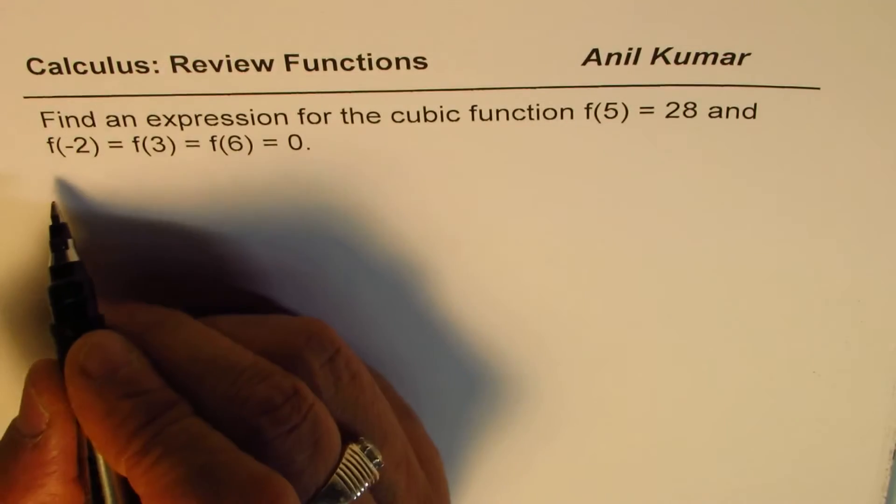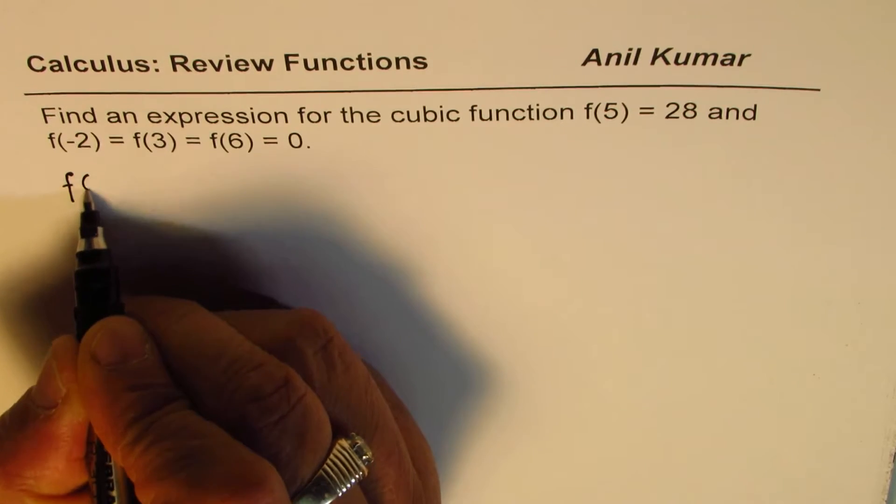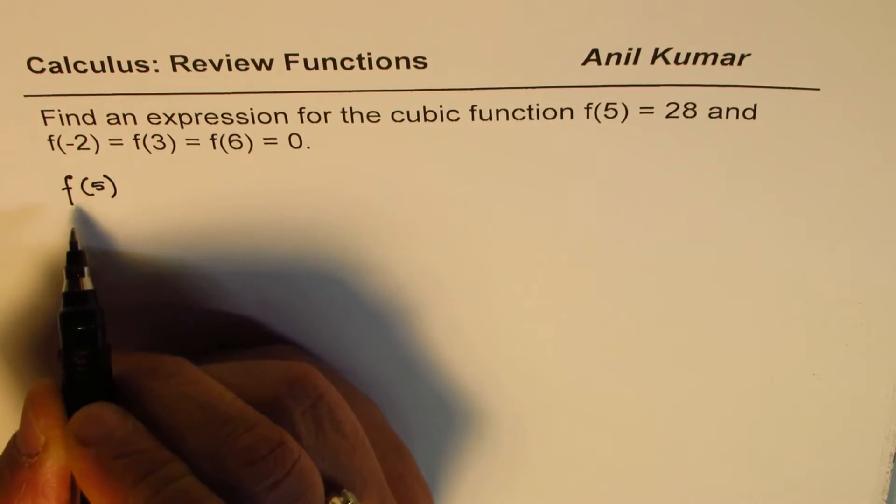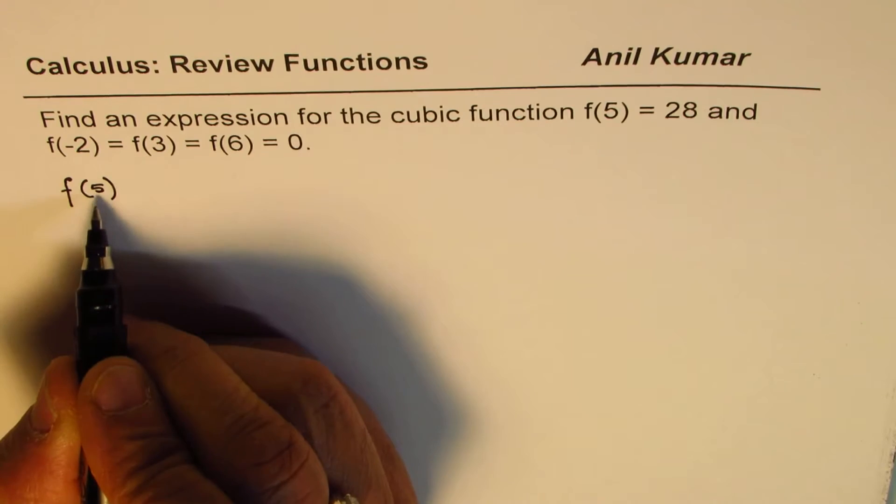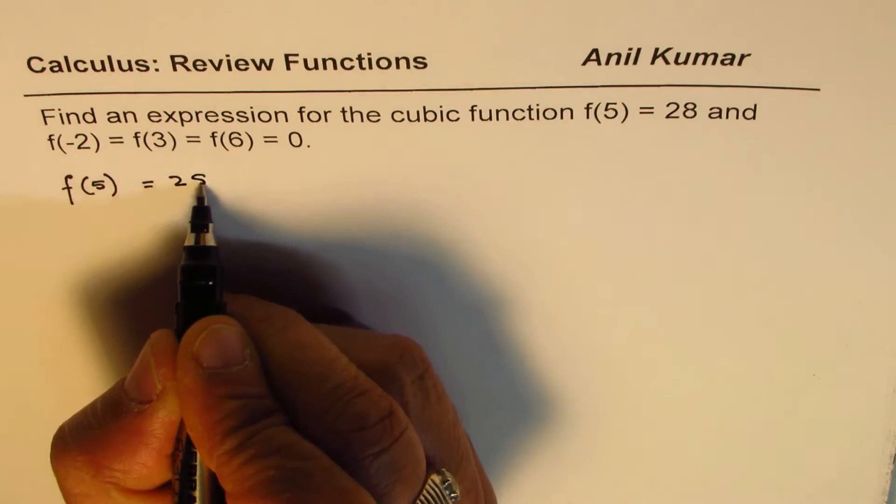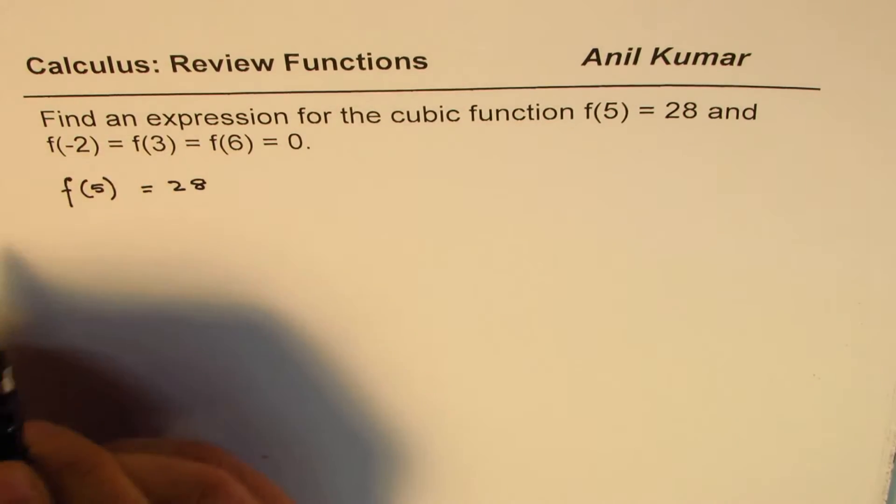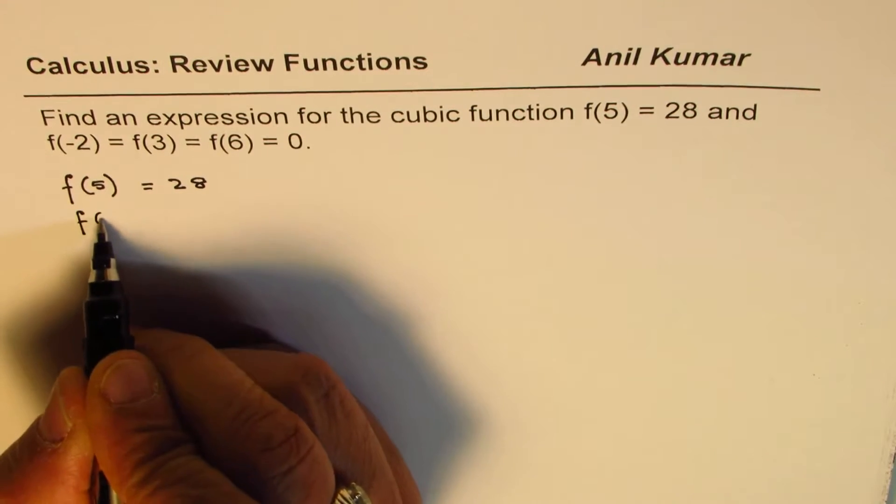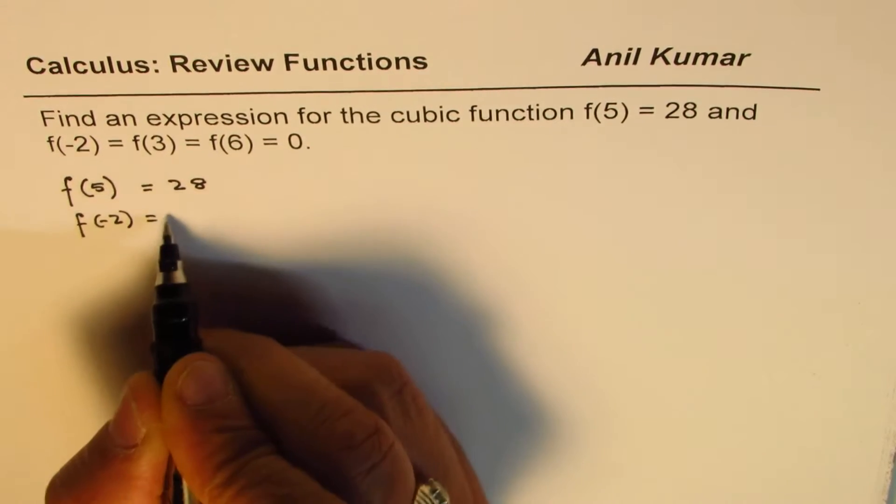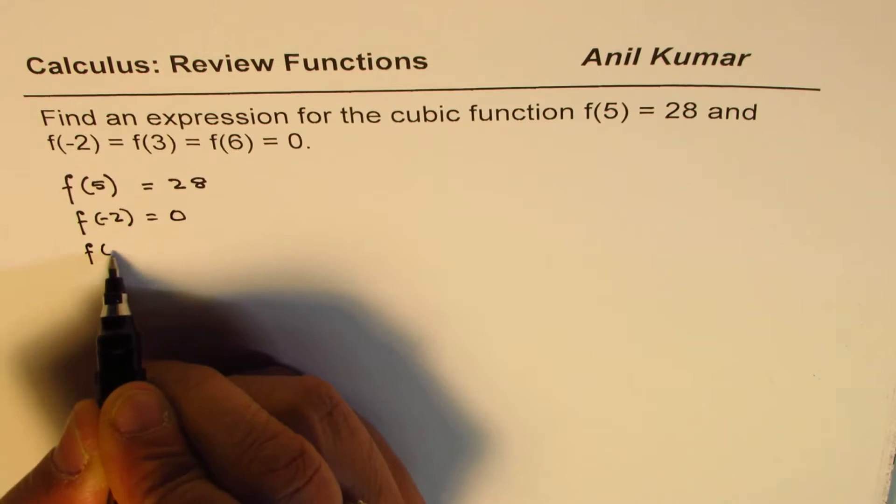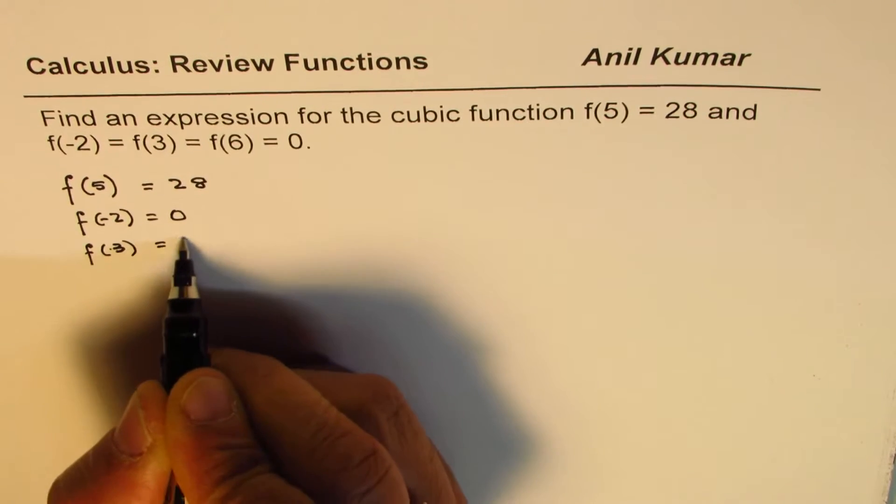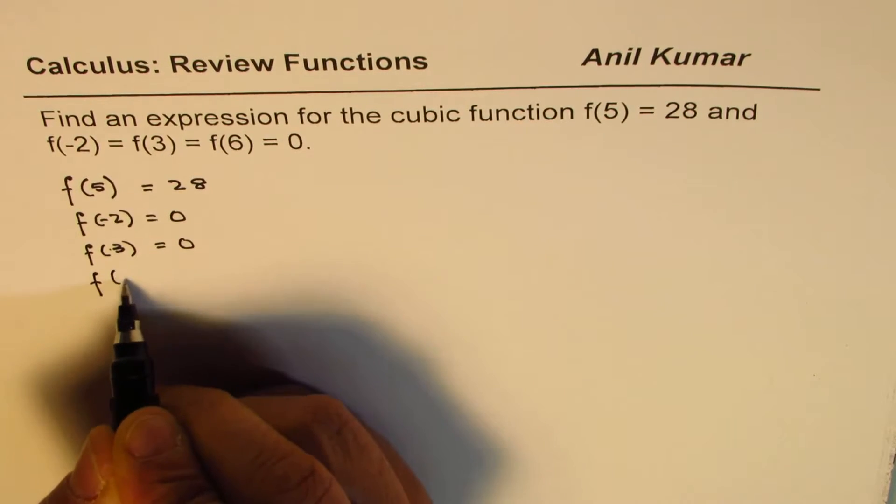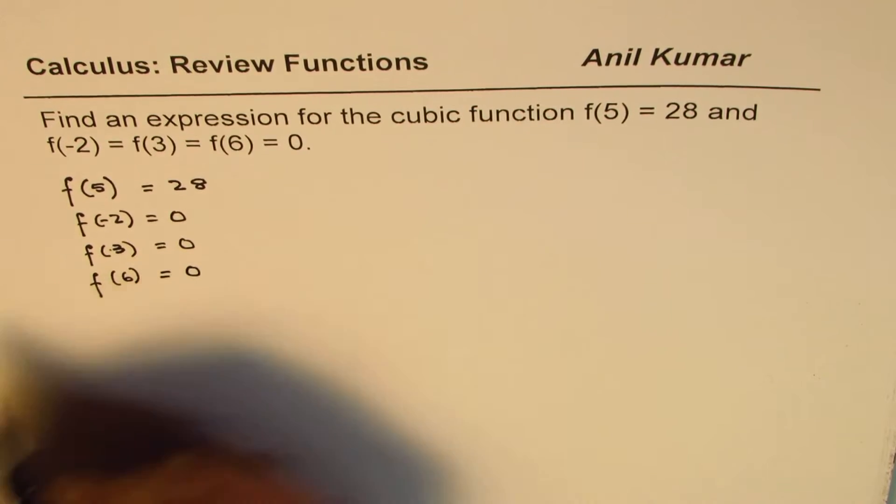Let's capture this information. We say f(5), in function notation, means value of the function at x equals 5 is 28. And all these are zeros. When you say f(-2) is 0, we are saying f(3) is 0, and we are saying f(6) is also 0.